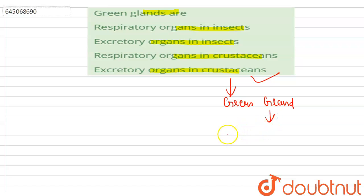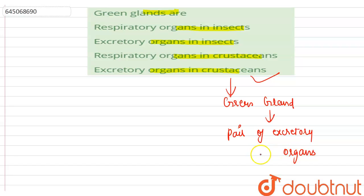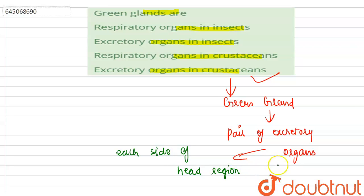Green glands are a pair of excretory organs located on each side of the head region of crustaceans, emptying at the base of the antenna.